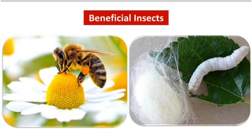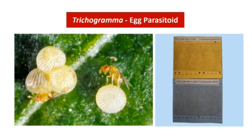Let us see about beneficial insects. The common beneficial insect known by everyone is the honeybee. The insect you see in the right picture is the silkworm, where raw silk is obtained.